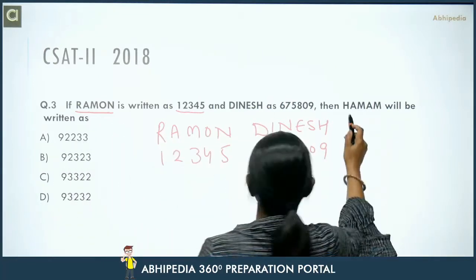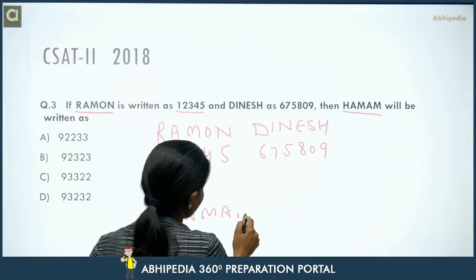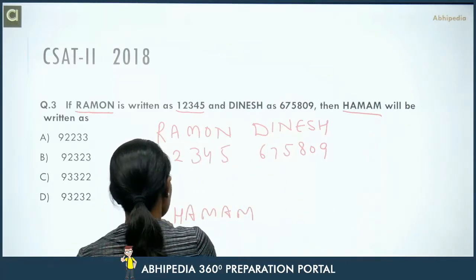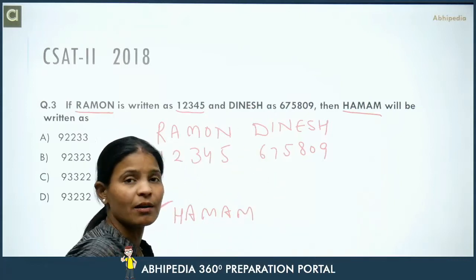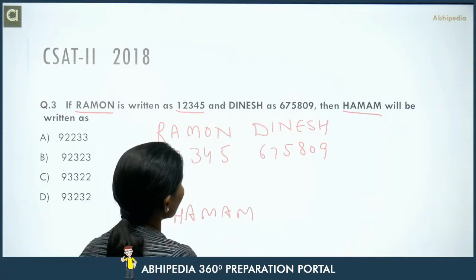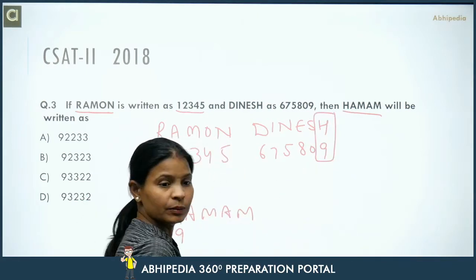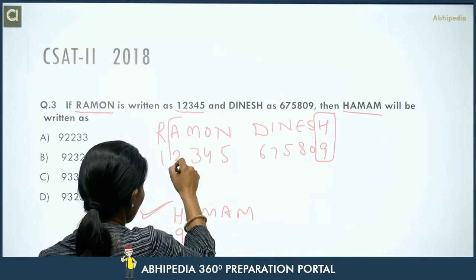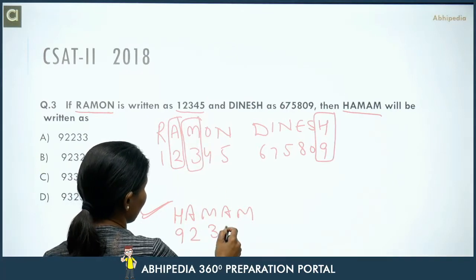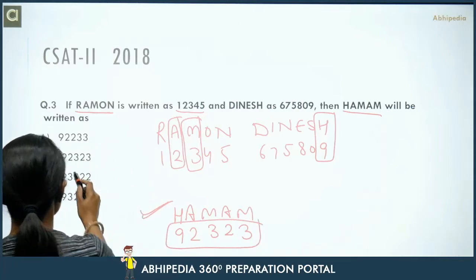So for HAMAAM: H=9, A=2, M=3, A=2, M=3. Therefore the answer is 9-2-3-2-3. Since all the corresponding codes for the letters in the question word are already available in the given information, we can directly pick those codes.